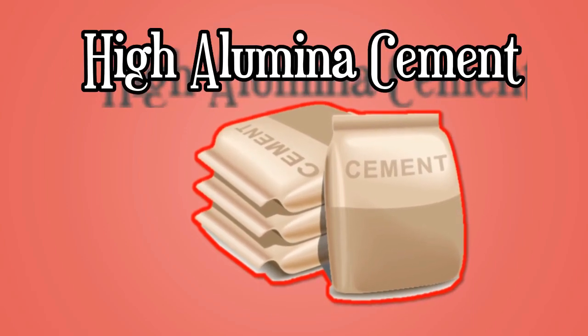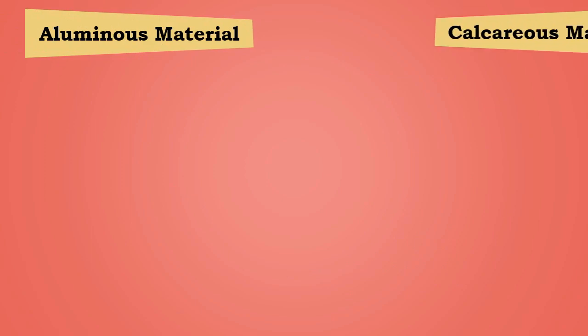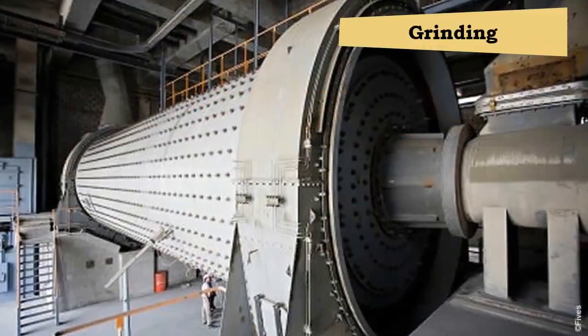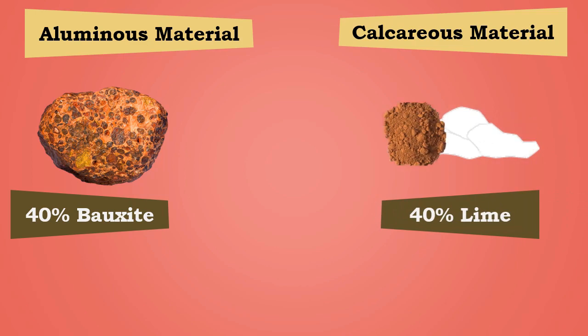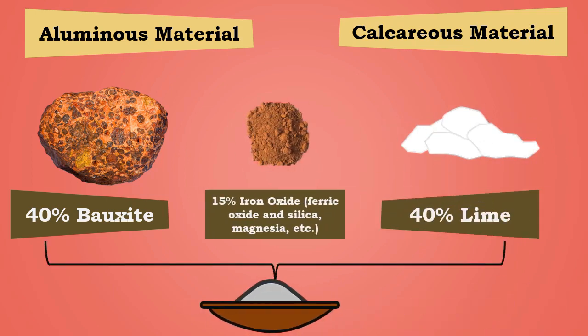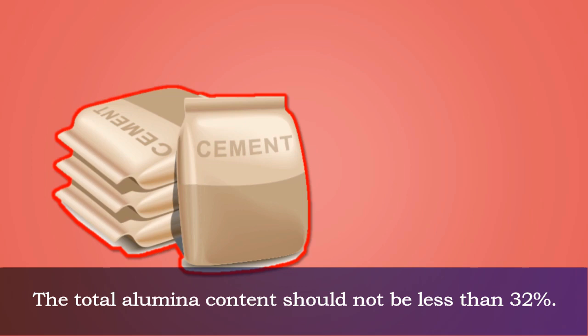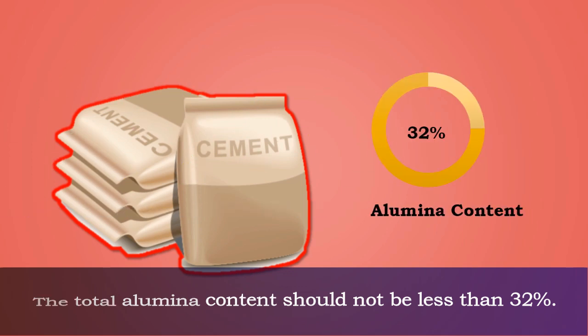High alumina cement is manufactured from aluminous and calcareous materials either by fusion or by sintering and grinding the resulting clinker. This involves fusing 40% bauxite, 40% lime, and 15% iron oxide with small amounts of ferric oxide, silica, magnesia, etc., at a very high temperature. The composition of a typical high alumina cement is shown in the table displayed on the screen. The total alumina content should not be less than 32%.